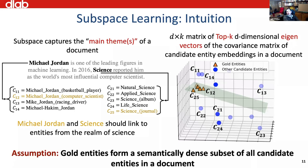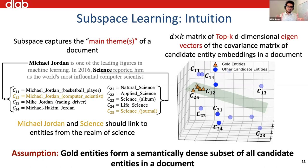Visually: if the assumption holds, the scientifically inclined entities — the computer scientist Michael Jordan and the Science journal — form a dense cluster in the embedding space, closer to the subspace represented by the green plane. The other (incorrect) candidate entities in blue are further from the subspace. A clarification: we have one subspace specific to each document; the disambiguation is performed per document, so there are different subspaces for different documents.